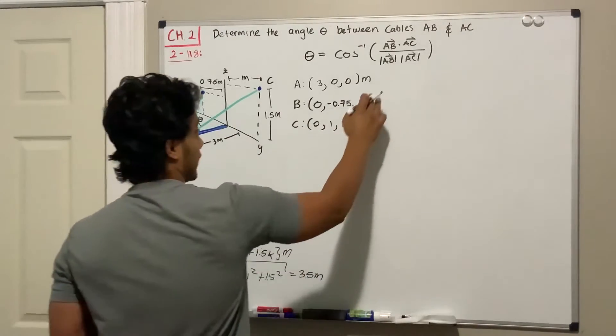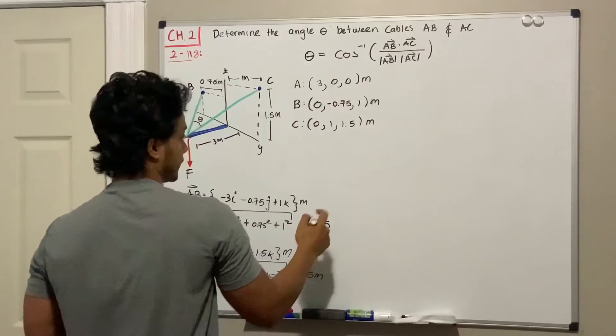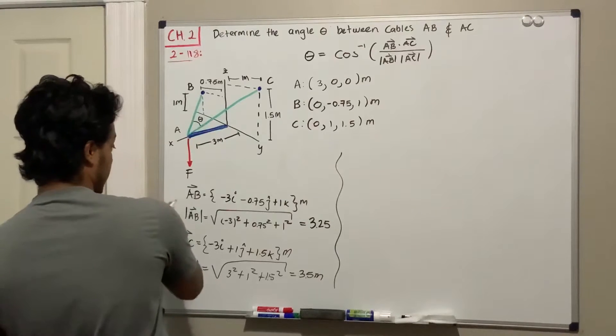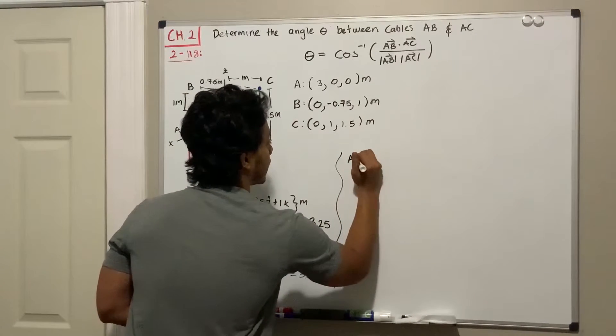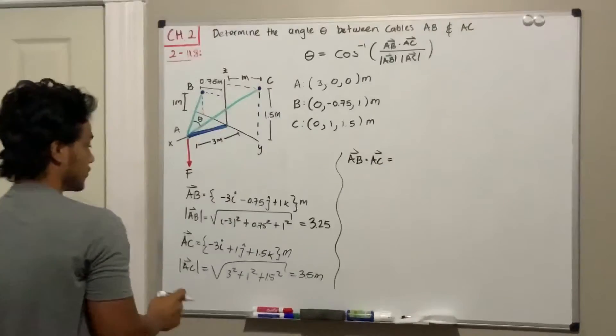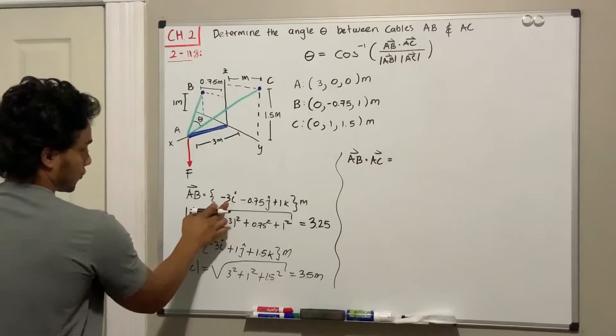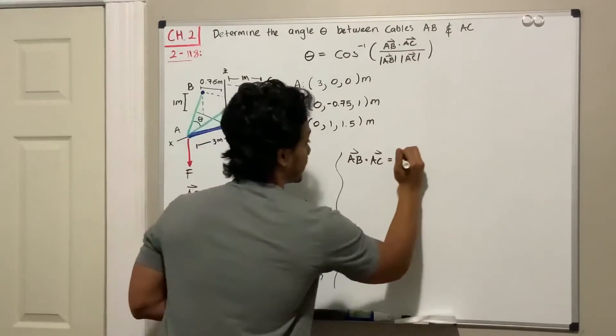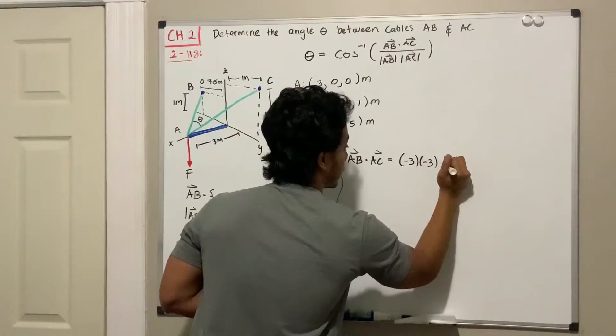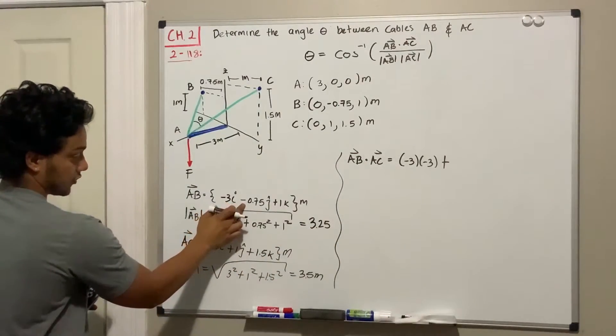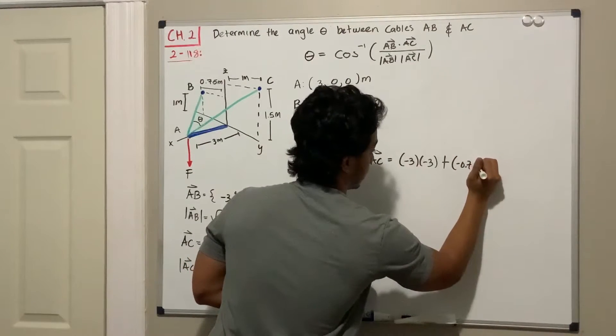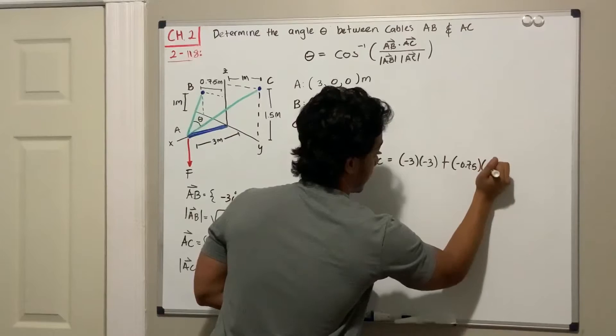What we actually need to do is multiply negative 3 by negative 3, so we got negative 3 multiplied by negative 3, plus negative 0.75 multiplied by 1, plus 1 multiplied by 1.5. This is actually equal to